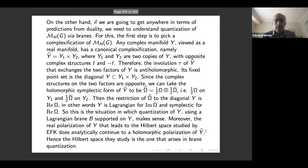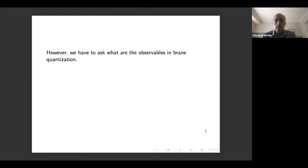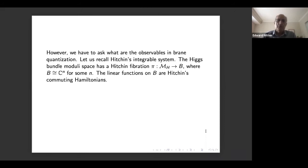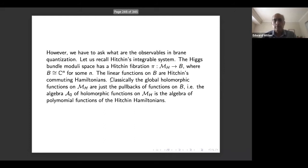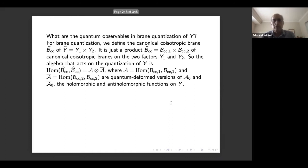The purpose of the previous lectures was to explain why the Hilbert space studied by EFK is the one that arises in brane quantization. Now we ask: what are the observables in brane quantization? The Higgs bundle moduli space has a Hitchin fibration, a projection to B which is C^N for some N. The linear functions on B are Hitchin's commuting Hamiltonians. Classically, the global holomorphic functions on the Higgs bundle moduli space are the pullbacks of functions on B — the algebra A₀ of holomorphic functions is the algebra of polynomials in the Hitchin Hamiltonians.